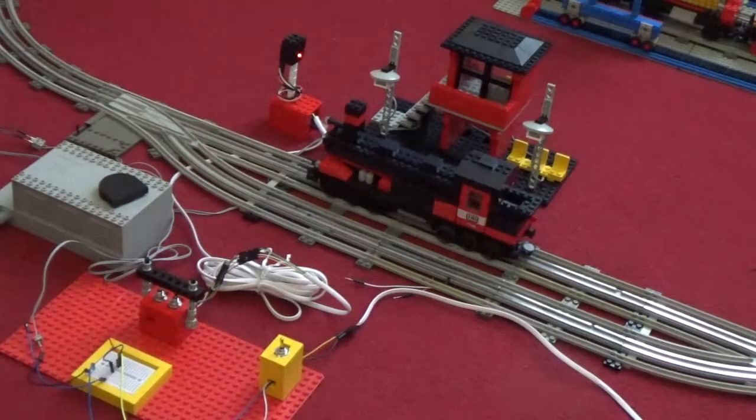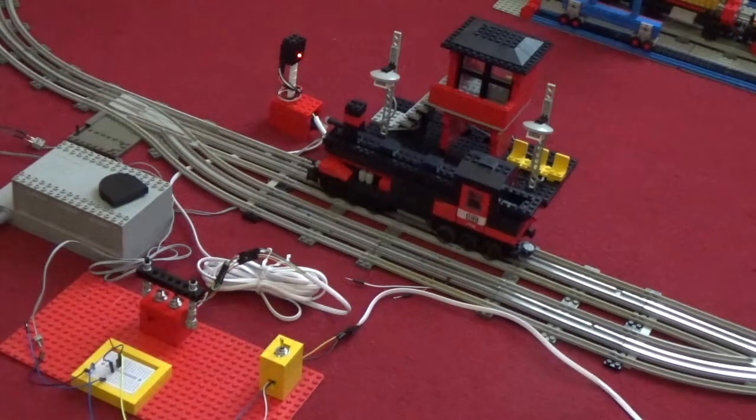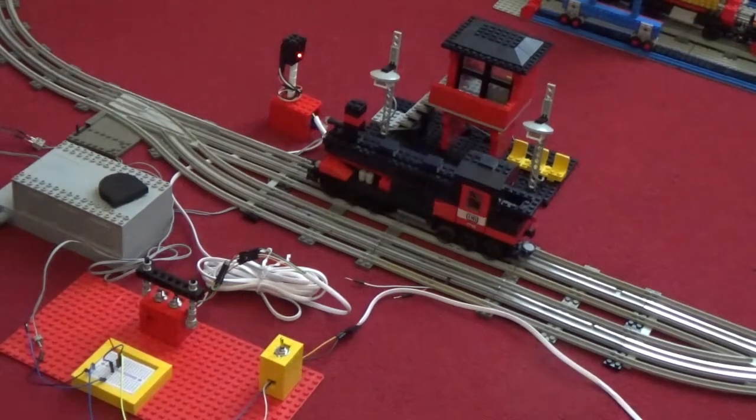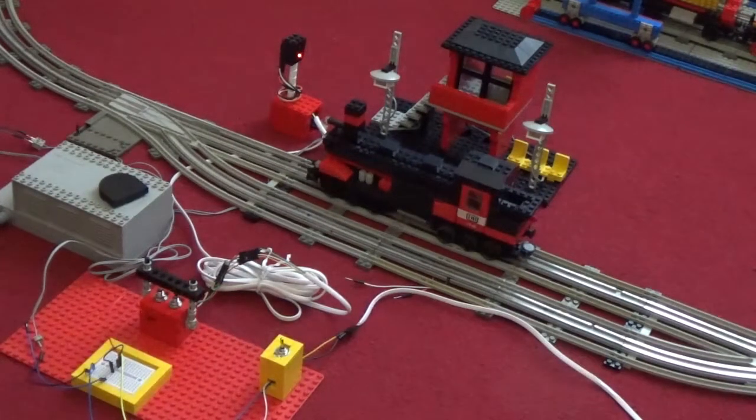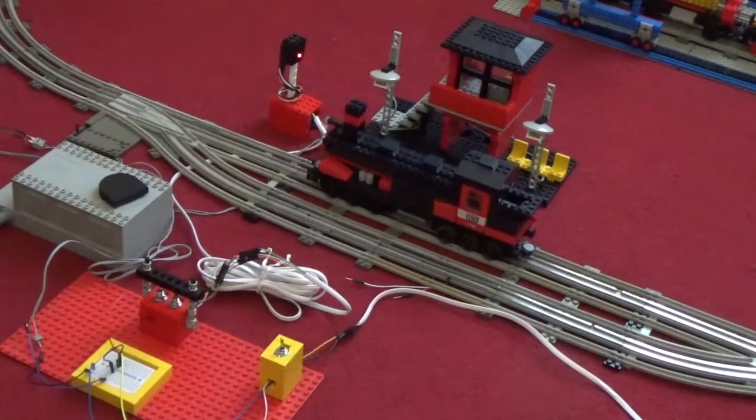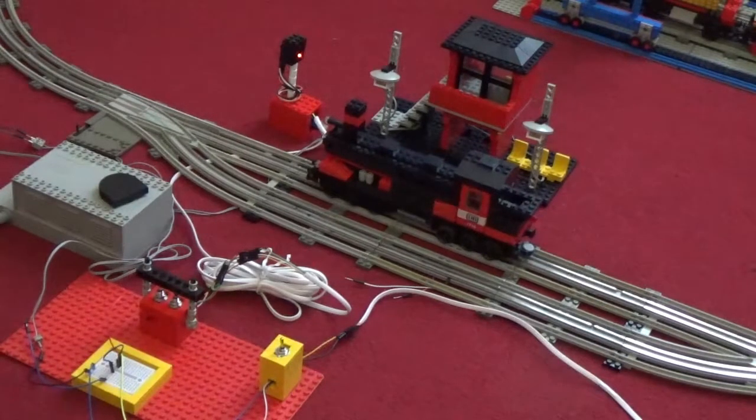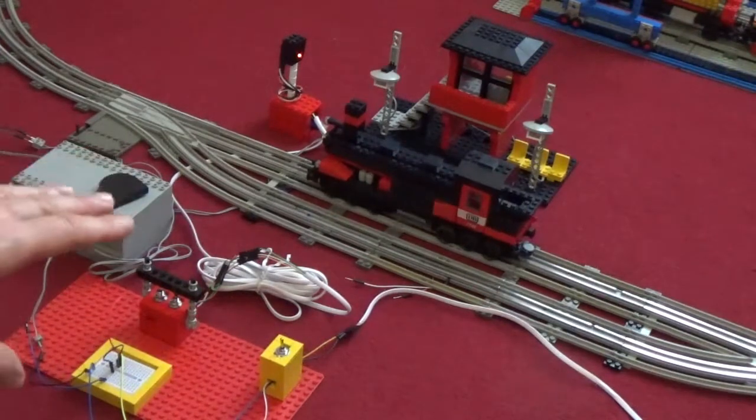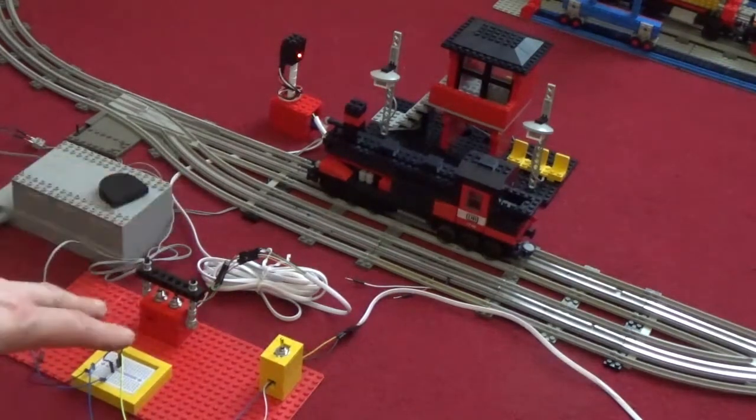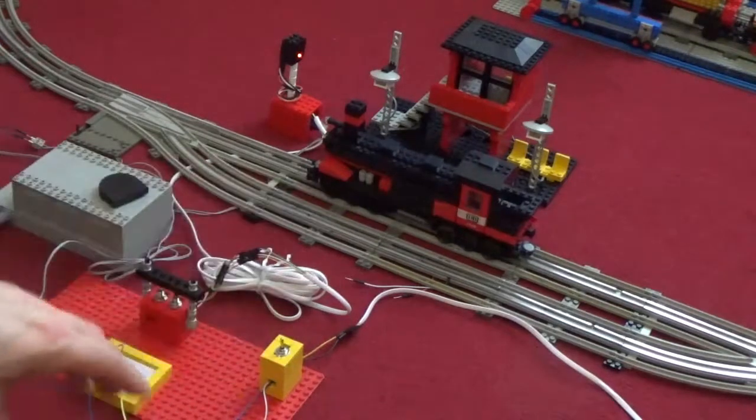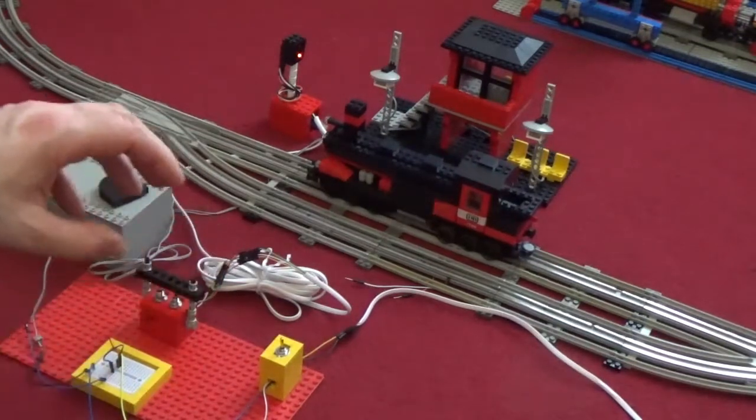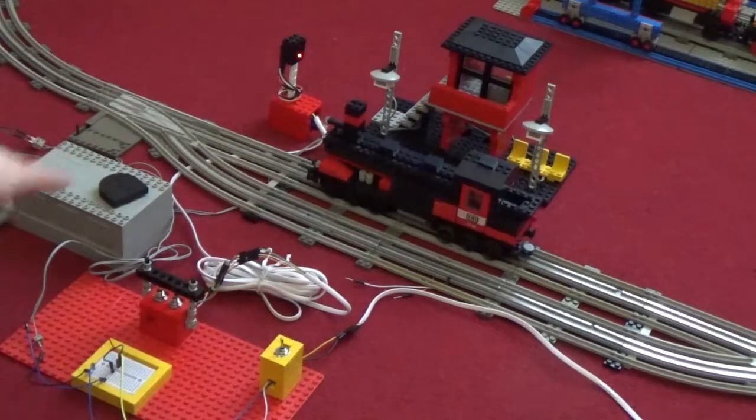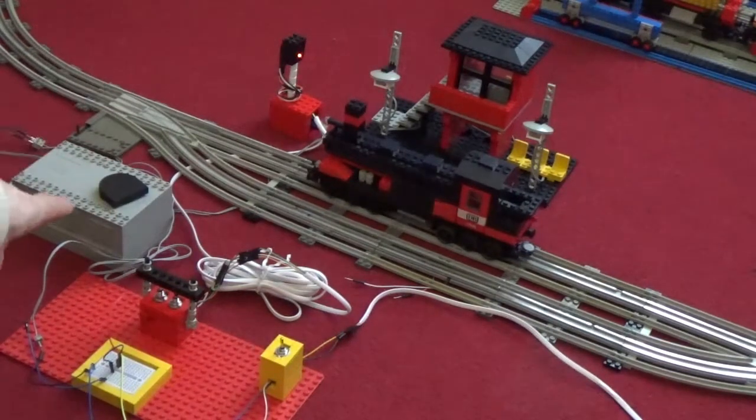And as you could see the train stopped and the lights turn again from green to red. Now a fundamental and necessary condition that has to be satisfied in order for the whole system to work as if we were using the original accessory set is that this system has to still work even if I invert the polarity of the transformer.